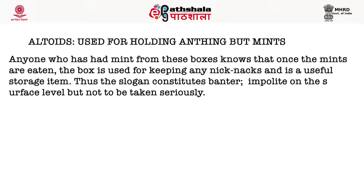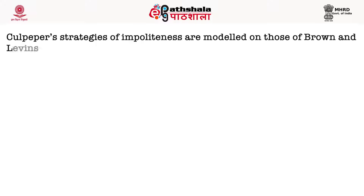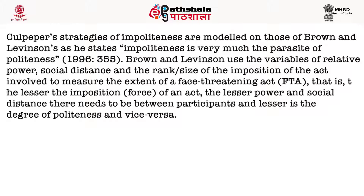We will now discuss in detail Culpepper's strategies of impoliteness, which can be applied on any text for analysis. Paying attention to the language used in a particular strategy is extremely helpful in understanding the use of impoliteness and its context. Culpepper's strategies of impoliteness are modelled on those of Brown and Levinson, as he states: 'Impoliteness is very much the parasite of politeness.' Brown and Levinson use the variables of relative power, social distance, and the rank or size of the imposition of the act involved to measure the extent of a face-threatening act (FTA). The lesser the imposition of an act, the lesser the power and social distance needs to be between participants, and the lesser the degree of politeness required, and vice versa.